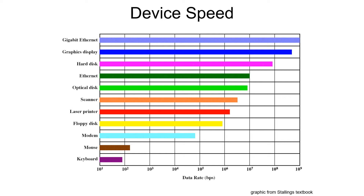They run at different speeds. This chart is a logarithmic scale, so each increment larger is ten times faster. You can see gigabit Ethernet is a billion bits per second — displays are even faster than that. And you can see hard disks. This is an old chart from the textbook. Down at the bottom you can see things like the keyboard. How fast can you type anyway? The keyboard and the mouse are very slow compared to many other devices.